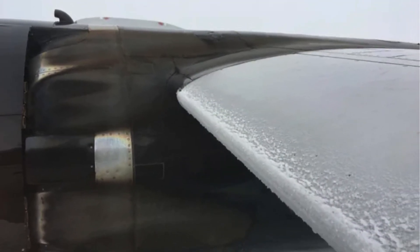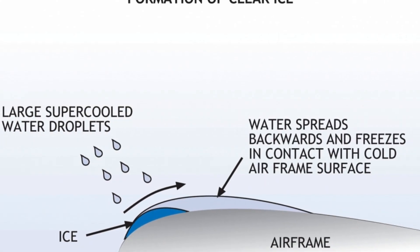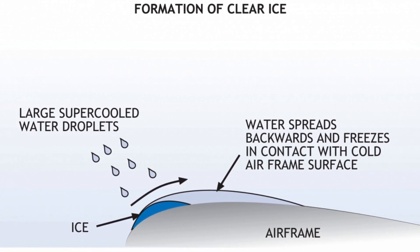When large supercooled water droplets strike the leading edge of the wing, they start to freeze. But at the same time, they release 80 calories of heat for each gram of water freezing to ice. This heat melts a portion of the ice back to water, and the water, being liquid under the influence of airflow from the front, flows back over the top and bottom of the wing and freezes again. Due to this flow back, there are no air bubbles between two layers of ice, so the ice looks clear and transparent — this is what is clear or glazed ice.